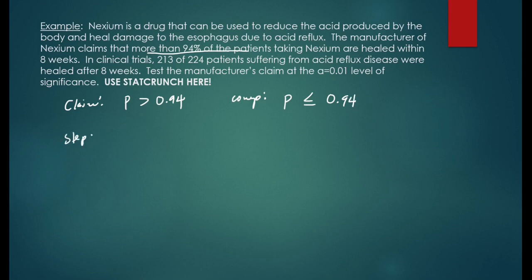Step 1, we'll decide which one is the null hypothesis. In this case, the null hypothesis is the complement, because that's the one with the equal sign. The alternative hypothesis is p is greater than 0.94, since this one does not contain an equal sign.